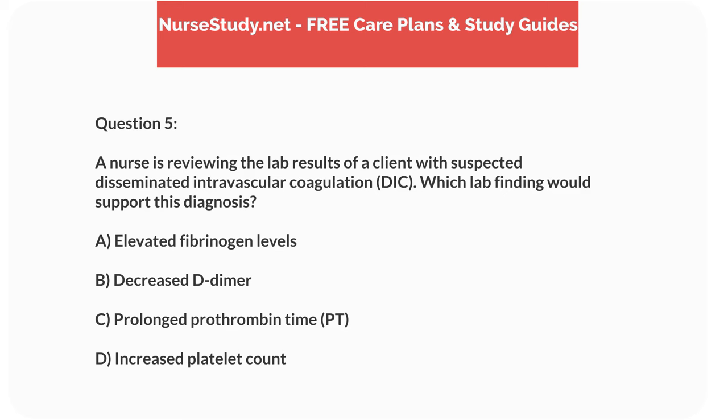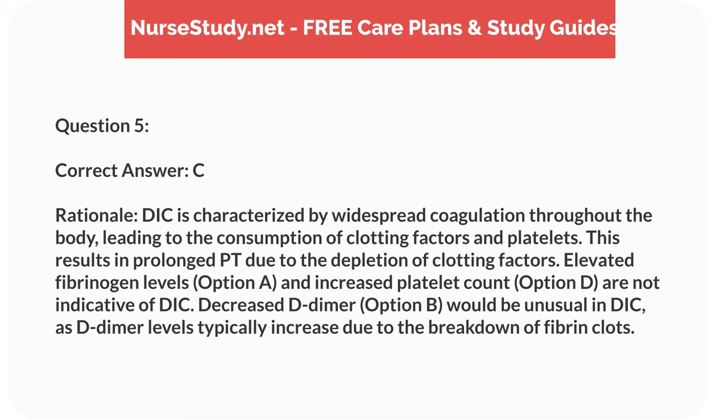Question 5. A nurse is reviewing the lab results of a client with suspected disseminated intravascular coagulation, DIC. Which lab finding would support this diagnosis? a. Elevated fibrinogen levels. b. Decreased D-dimer. c. Prolonged prothrombin time, PT. d. Increased platelet count.